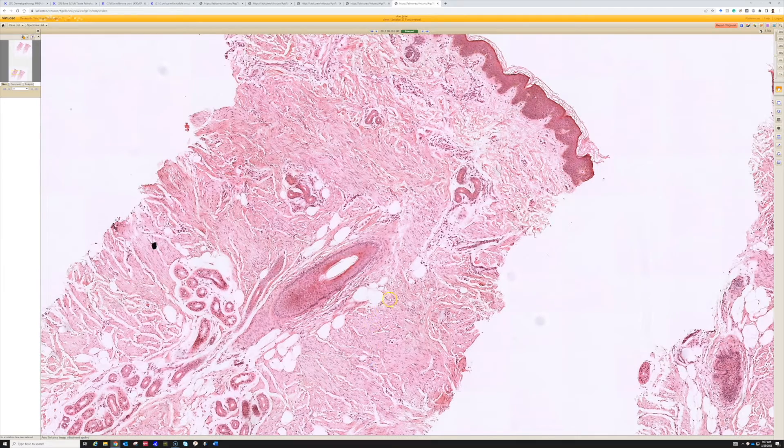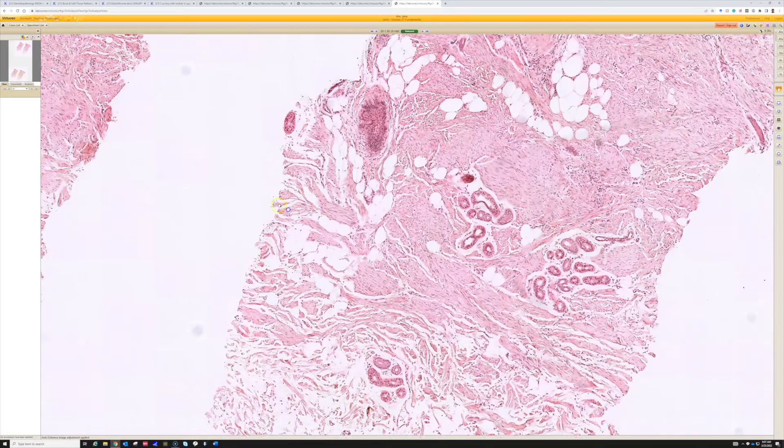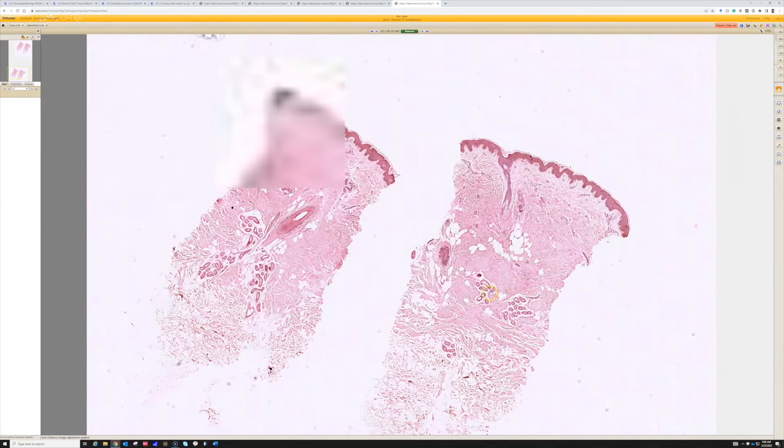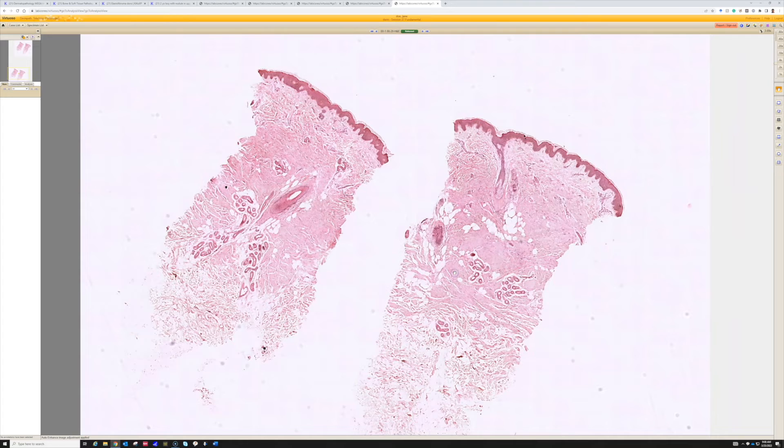But I wanted to bring up fibroblastic connective tissue nevus because it does come in the differential of this sometimes, and it's good to know. So a nice example here of benign dermatomyofibroma, and that's a good example.